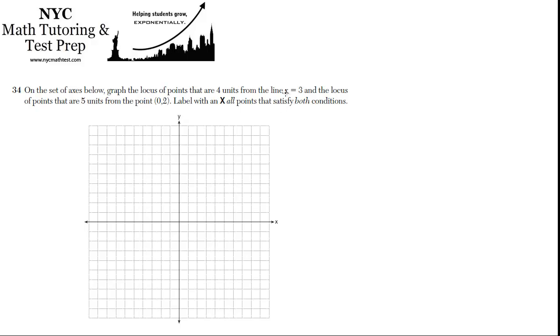First we're going to go 4 units from the line x equals 3. So let's draw the line x equals 3. Here's x equals 3. It should be a vertical line.